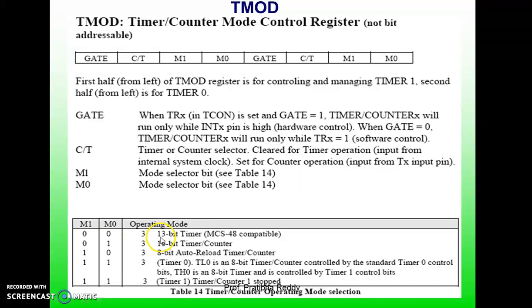Mode 00 means the operation mode is a 13-bit timer. Mode 01 means the operation mode is a 16-bit timer. Mode 10 means 8-bit auto-reload mode. Mode 11 means TL0 is an 8-bit timer or counter controlled by the standard timer 0 control bits, and TH0 is an 8-bit timer controlled by timer 1 control bits. These modes of operation apply to both timer 0 and timer 1.